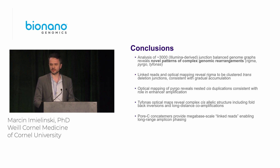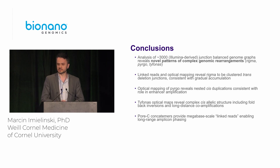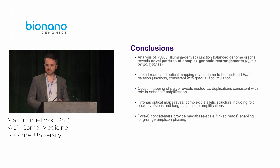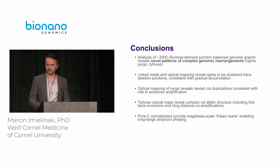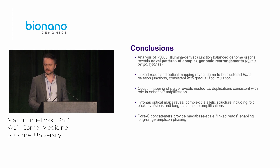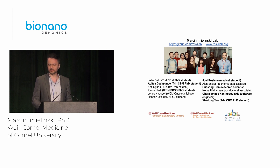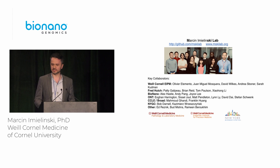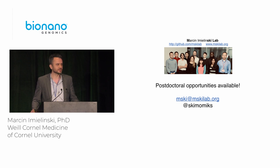In conclusion, we've identified three novel patterns of complex rearrangement across 3,000 cancer genomes. RIGMA contain junctions in trans, consistent with gradual accumulation of deletions at fragile sites. PIRGO are nested cis-duplications consistent with enhancer amplification. And Typhonus co-amplify oncogenes through clusters of foldback inversions. We can get insight into megabase-scale structure using Pore-C concatemers. I'll acknowledge the folks who worked on this in my lab, collaborators at BioNano and ONT. If you're interested in this work, please contact me — there are postdoc positions available in the lab. Thanks.